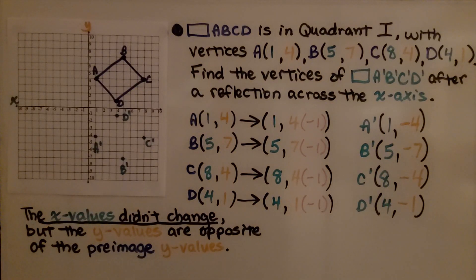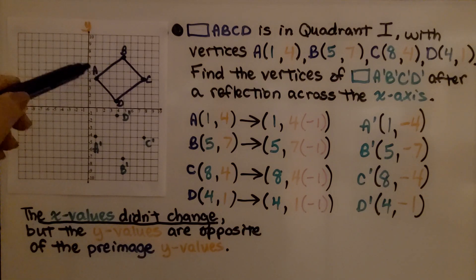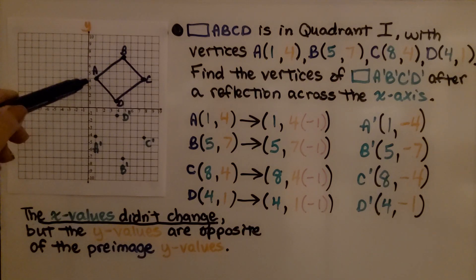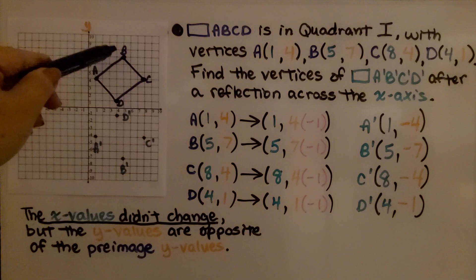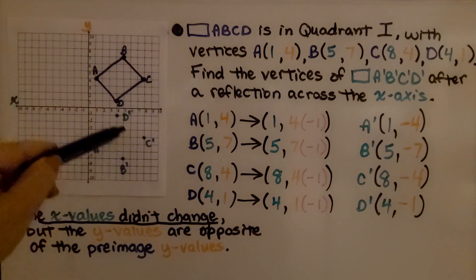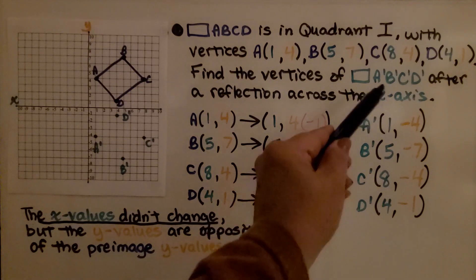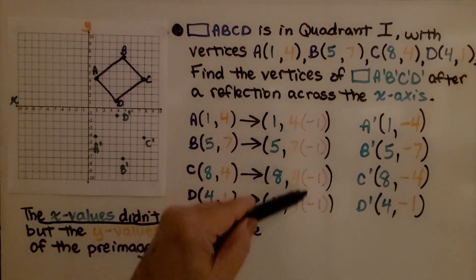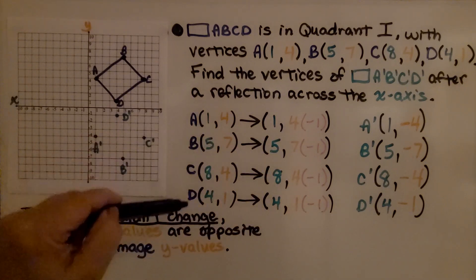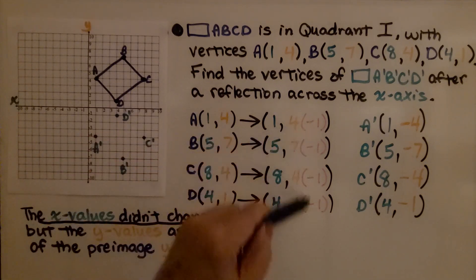Rectangle ABCD is in quadrant 1 with vertices: A is at 1, 4; B is at 5, 7; C is at 8, 4; and D is at 4, 1. Find the vertices of rectangle A prime, B prime, C prime, D prime after reflection across the x-axis. Since we're going across the x-axis, we're going to multiply the y-values of the pre-image by negative 1.